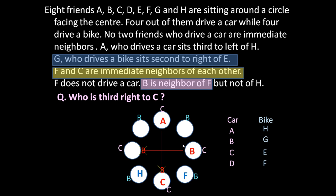Now only one car driver is left: D. So D occupies the remaining car position. Only two places are left and one statement remains: G, who drives a bike, sits second to the right of E. So placing E in the available position, the second position to E's right gives us G. Now we can see G, E, H and F are driving a bike, and A, B, C and D are driving the car. The circular arrangement is complete — all statements have been accounted for.